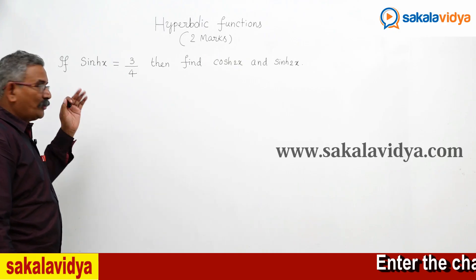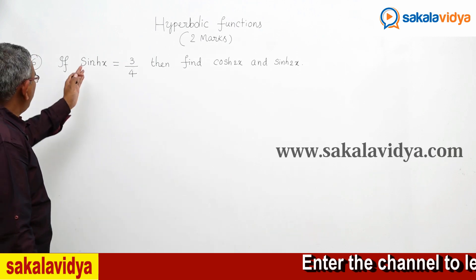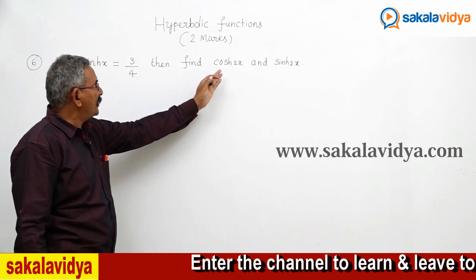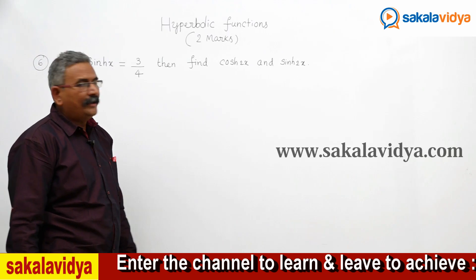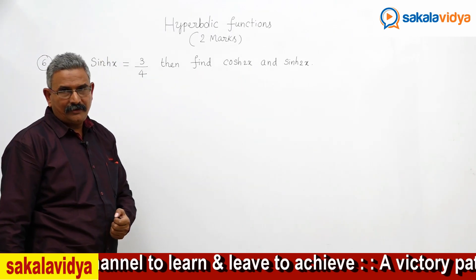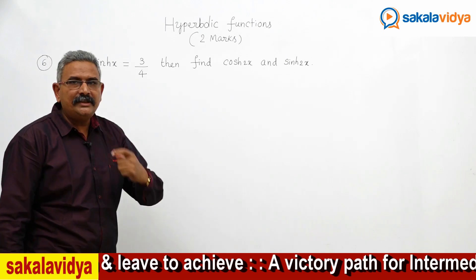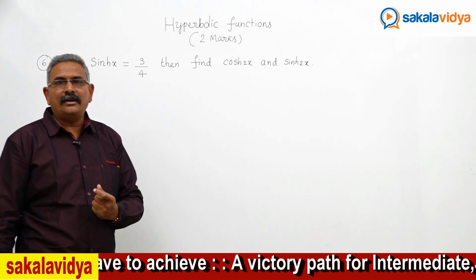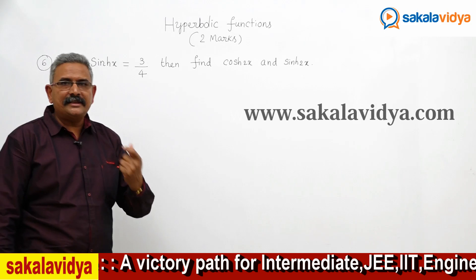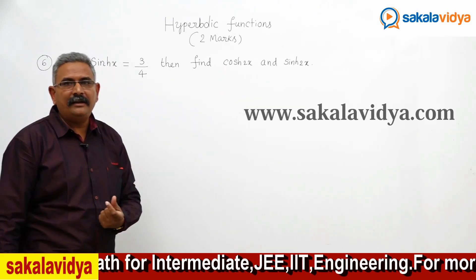Now let us discuss one more problem. If sinh(x) equals 3 by 4, then find cosh(2x) and sinh(2x). In order to find out these values, first we need to find out the cosh(x) value. With the help of sinh(x) and cosh(x), both values can be evaluated.